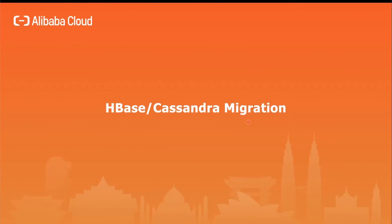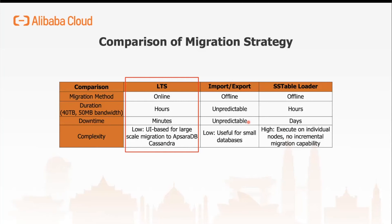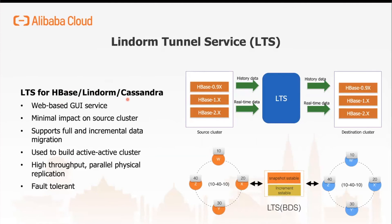Let us look at how we can migrate HBase or Cassandra databases to Alibaba Cloud. You can use typical export/import, SS table loader for Cassandra, or snapshot copy table for HBase. However, we recommend LTS — the Lindorm Tunnel Service. With LTS, you can migrate data online, with migration time usually in hours and downtime only in minutes for switching the connection endpoint. Complexity is low because it's UI-based. It has minimal impact on the source cluster since LTS reads the changelog. It supports both full and incremental data changes, can build active-active clusters between HBase or Cassandra instances, and is fault-tolerant against failovers on source or target.